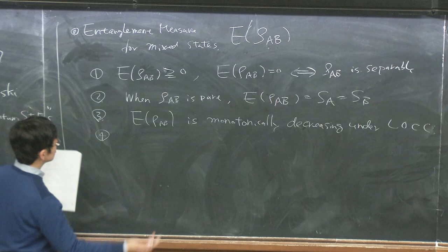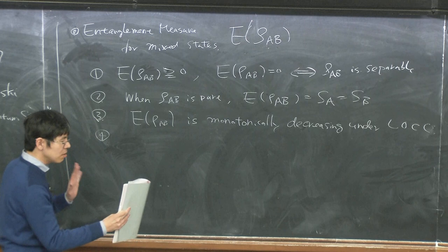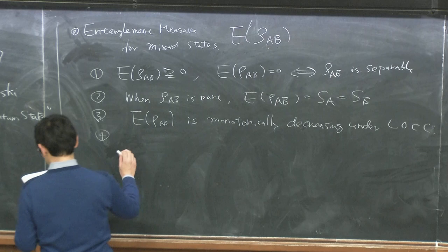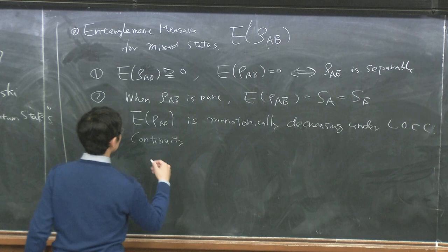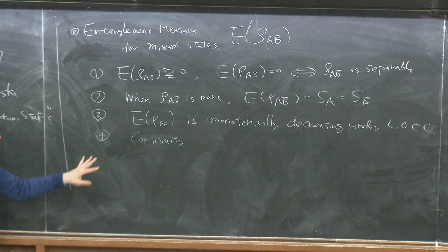If some operation increases entanglement, it is not interesting. We are interested in the special quantity we call entanglement, which we have to protect. The fourth condition is continuity: this quantity changes only infinitesimally when we change ρ_AB by an infinitesimally small amount.